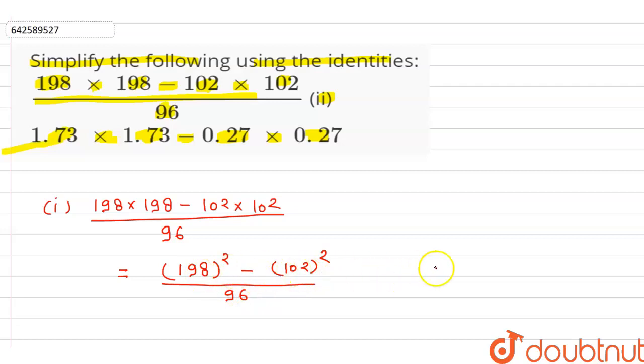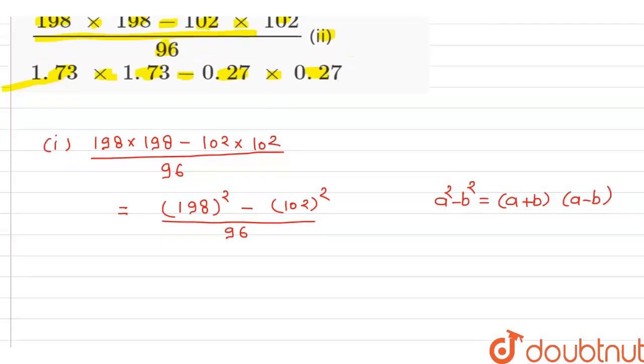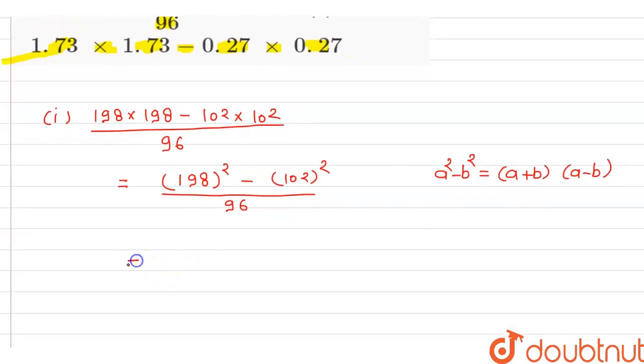This is nothing but the form of a square minus b square. So this is a plus b in one bracket and another bracket is a minus b. So we will expand this expression and get equal to 198 plus 102 into 198 minus 102 divided by 96.